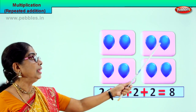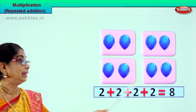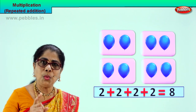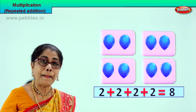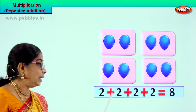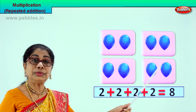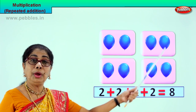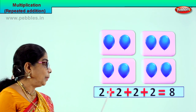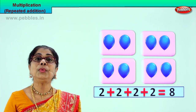One, two, three, four, five, six, seven, eight. Yes, correct. What are we learning? Multiplication is repeated addition. Two plus two is four, plus two is six, plus two is eight. Two plus two plus two plus two equal to eight.